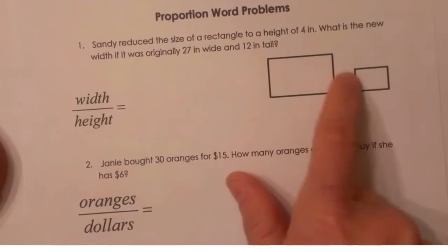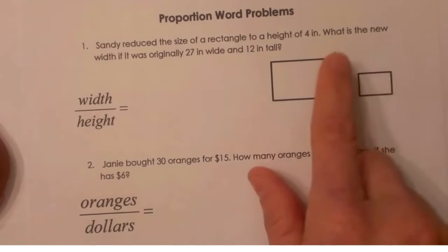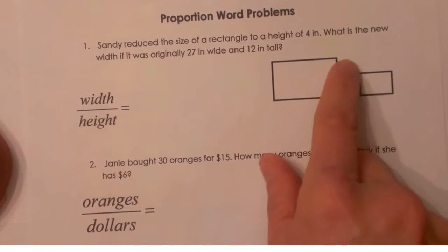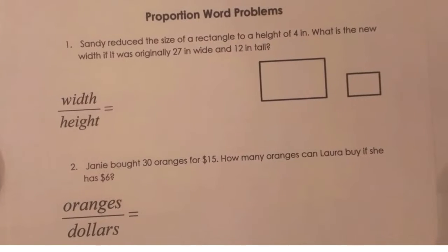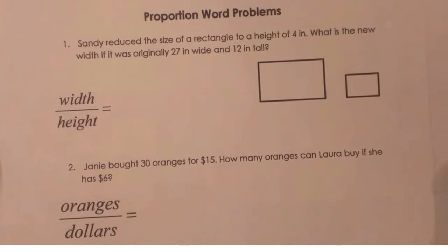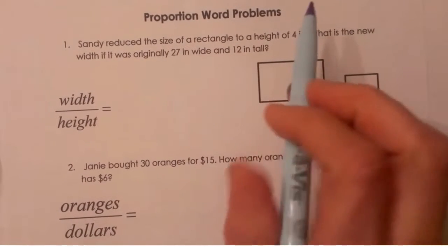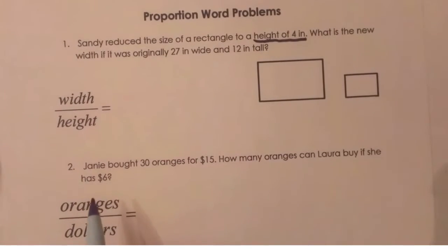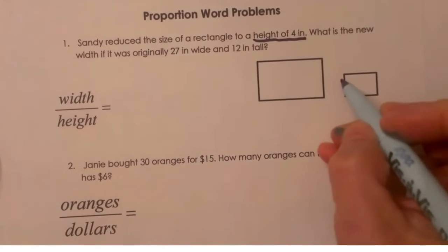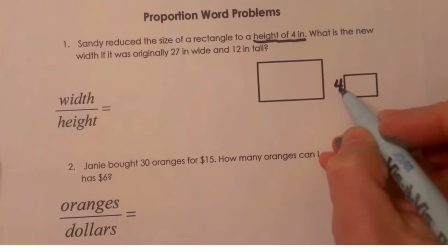Over here I have two rectangles representing the original large rectangle and then the small one, so you want to draw a picture to represent it. Let's label what we know. We know that we have a new rectangle that is 4 inches in height, so I'm going to go over here and label my height 4.